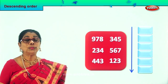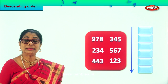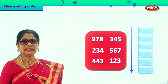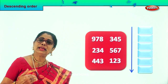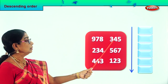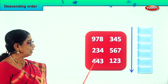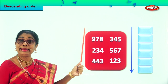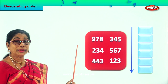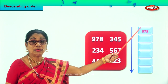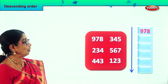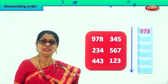We have six numbers here. We are learning to arrange these numbers in descending order. Let's find the biggest number. To find the biggest number, what do we do? Go to the hundred place — look at the hundredth place, which is the biggest digit. We have three hundred, five hundred, one hundred, four hundred, two hundred and nine hundred. Here we have nine hundred seventy-eight, which is the biggest number. So nine hundred seventy-eight goes right on the top because we are arranging numbers in descending order.